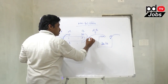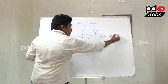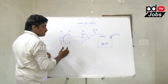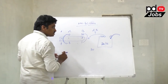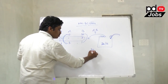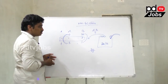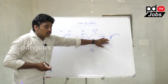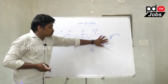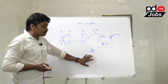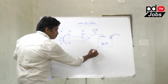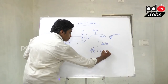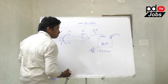Pipe A fills 3 liters and pipe B fills 1 liter, giving a combined rate of 4 liters. The tank capacity is 30 liters. So 30 divided by 4 gives 7 and a half minutes to fill the tank.